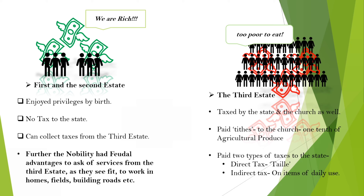The third estate had to pay taxes to the state as well. These can be understood in two types: the first is direct tax, called taille, and the second was indirect tax levied on items of daily use like salt or tobacco — similar to the cess or GST levied now.